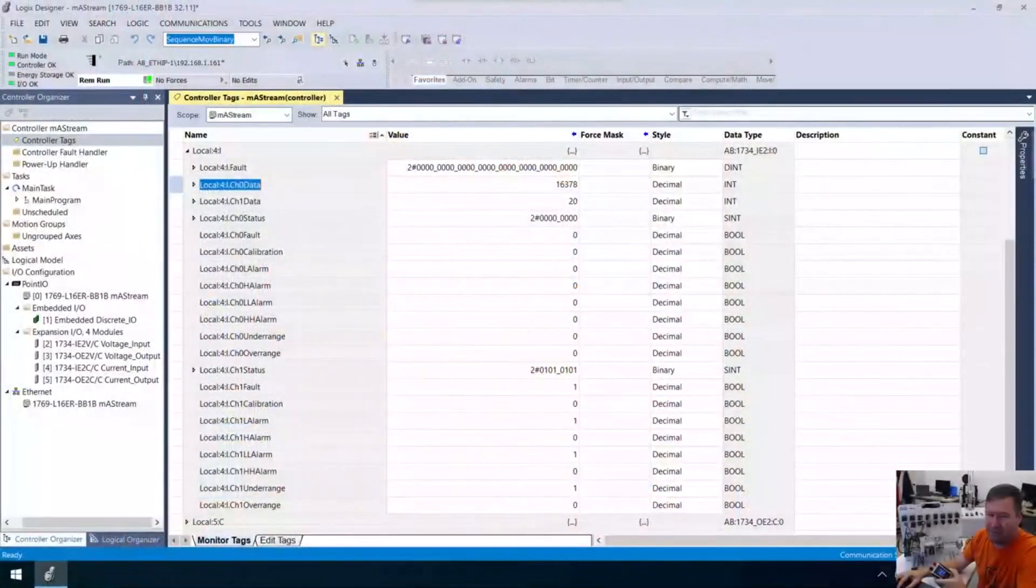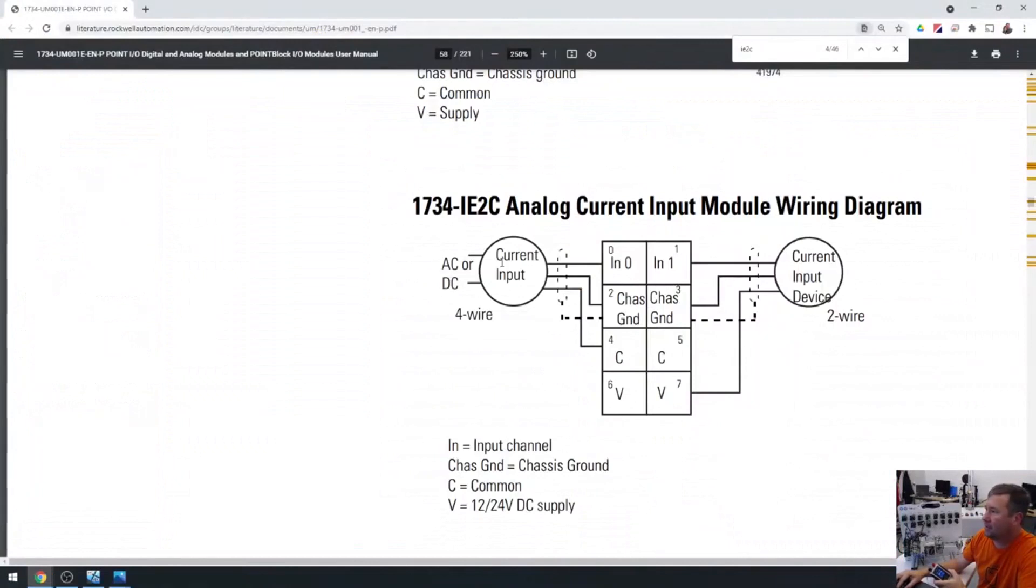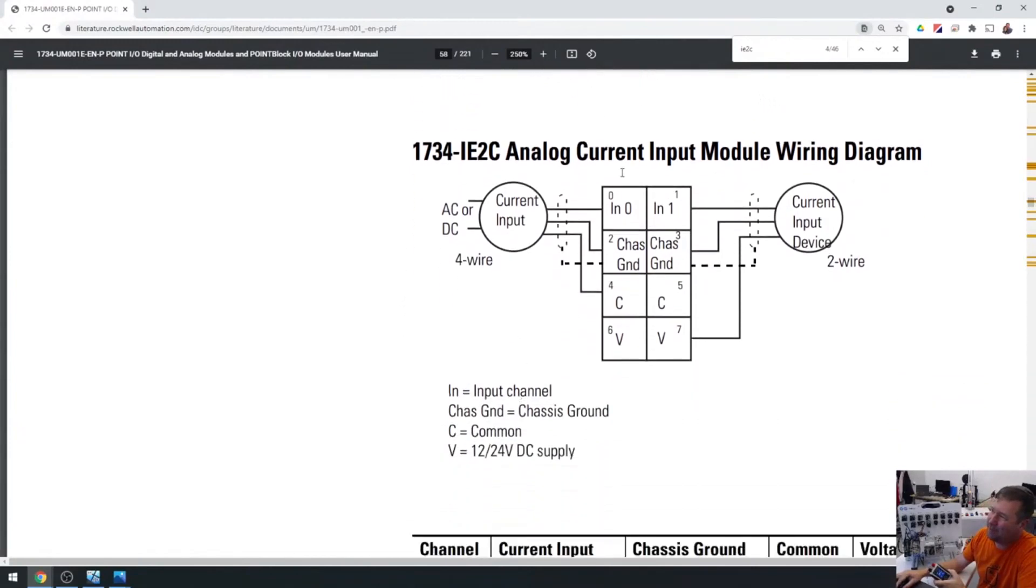But let's talk about two-wire. So if we go back to our manual here, this was our four-wire side. And first, I'm not super happy with how they do this manual, but everybody is a critic, so I don't want to go too far down that. I do have people that think that two-wire devices are for input one and four-wire devices are for input zero. That's not true. You can use these on either side.